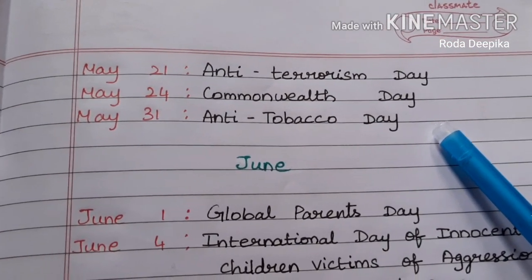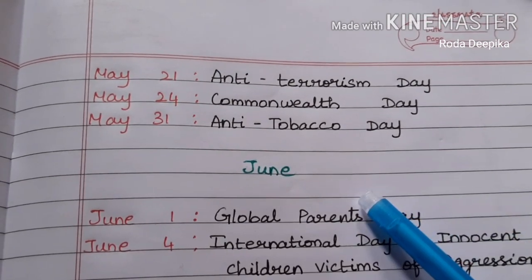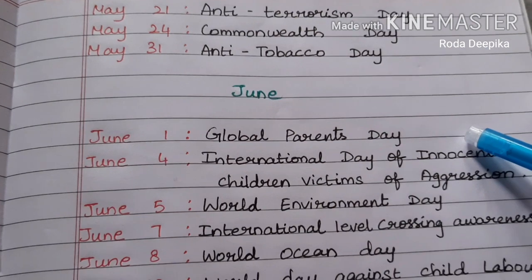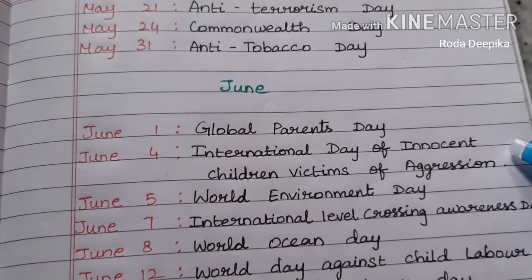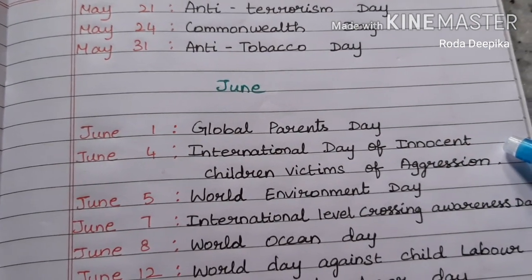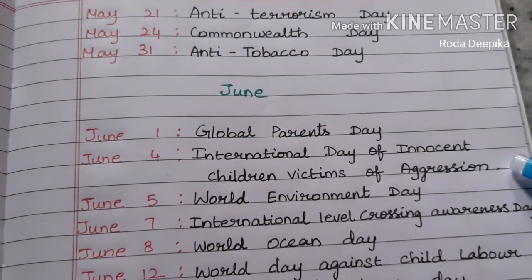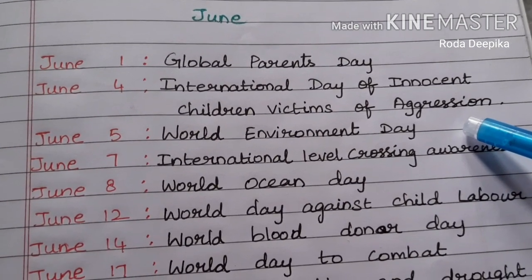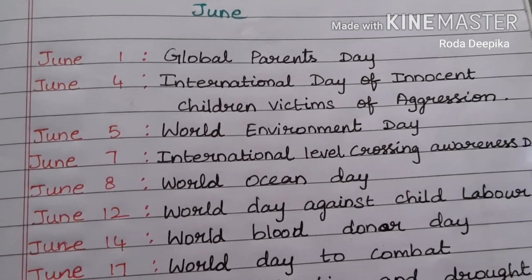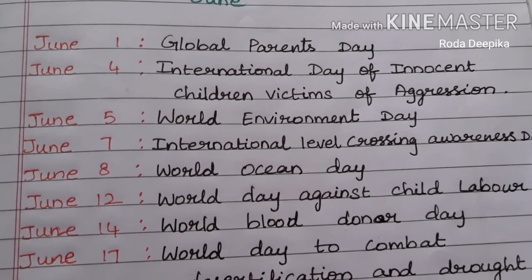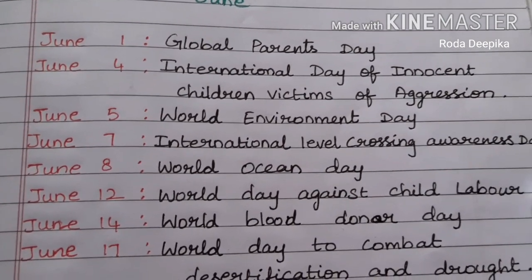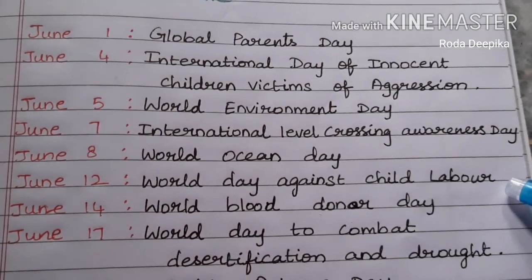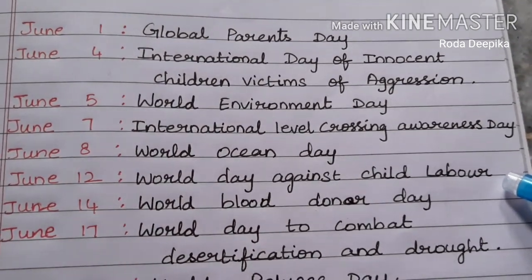These are the important days in May month. Let's move on to June month. June 1: Global Parents Day. June 4: International Day of Innocent Child Victims of Aggression. June 5: World Environment Day. June 7: International Level Crossing Awareness Day. June 8: World Ocean Day. June 12: World Day Against Child Labour.